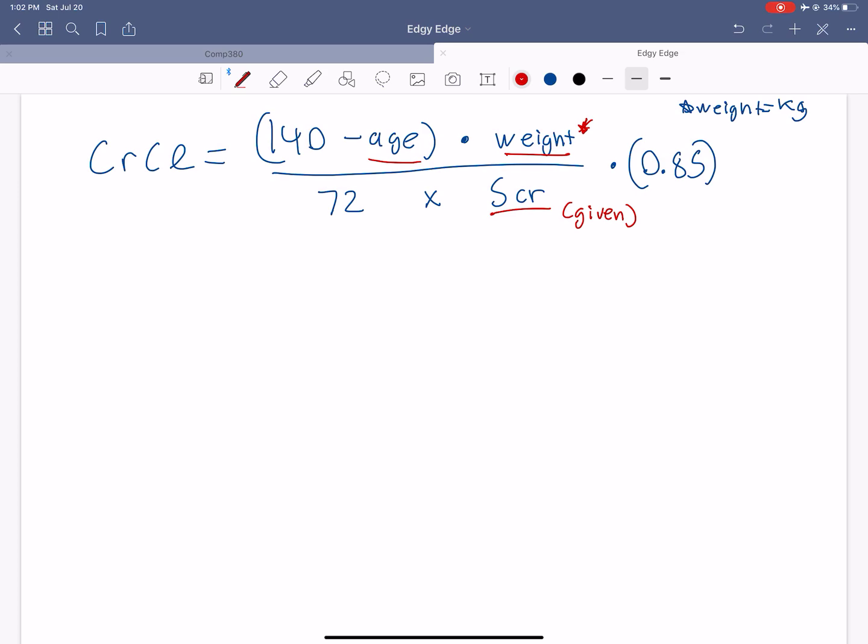But generally, this is the formula that you use to estimate their creatinine clearance. So everything else is very self-explanatory except weight. So we're going to talk about actual body weight. And I'm going to abbreviate body weight as BW. So actual body weight, there's ideal body weight, and then there's adjusted body weight.